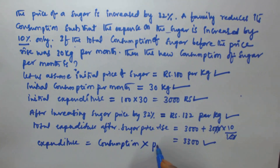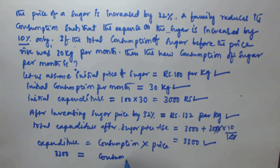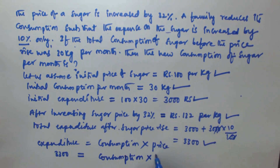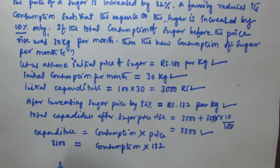So the expenditure is 3300 and consumption we have to find. The price we know is 132 rupees per kg. So the consumption is equal to 3300 divided by 132.